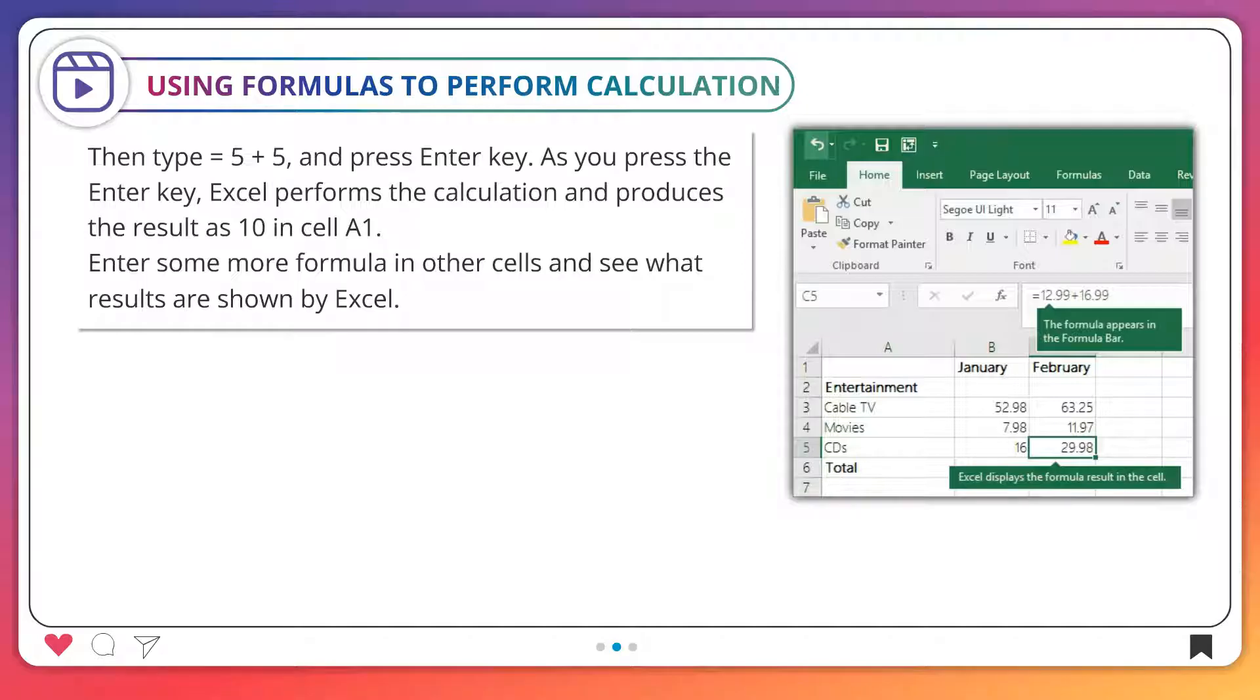Enter some more formulas in other cells and see what results are shown by Excel. 1 is equal to 8 minus 5. 2 is equal to 8 multiplied 5. 3 is equal to 8 divided by 5. 4 is equal to 8 exponent 5.